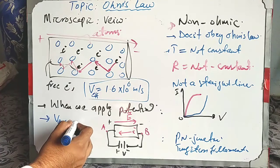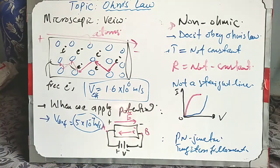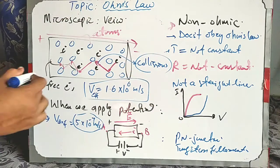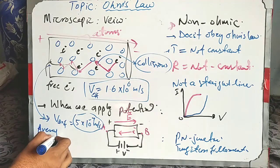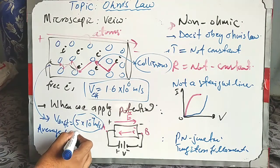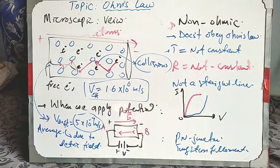The electrons slow down. Their average velocity opposite to the direction of the field is called drift velocity — that value is 5 × 10⁻⁷ meters per second. The electrons become this slow due to collisions. These collisions are what create resistance inside the conductor — that is why this is called the microscopic internal view. The cause of resistance is the collisions of charges inside the conductor.